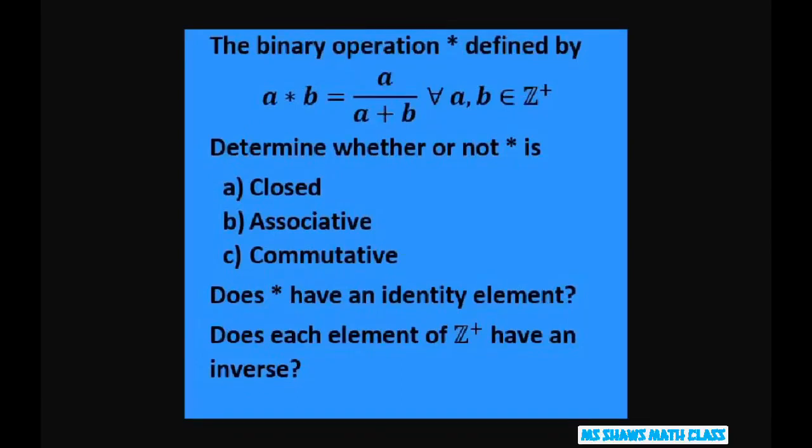Hi, everyone. The binary operation star defined by a star b equals a divided by a plus b for all a, b in positive integers. We have to determine if our operation is closed or not, associative and commutative. Do we have an identity element? And does each element of our positive integers have an inverse?